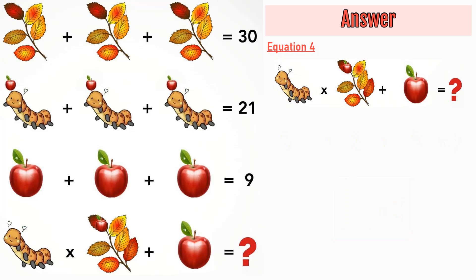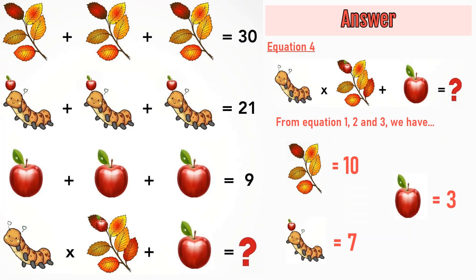Now moving on to the last equation which is equation number 4. From equation 1, 2 and 3, we have 5 leaves is equal to 10, a caterpillar with an apple is equal to 7, an apple is equal to 3.